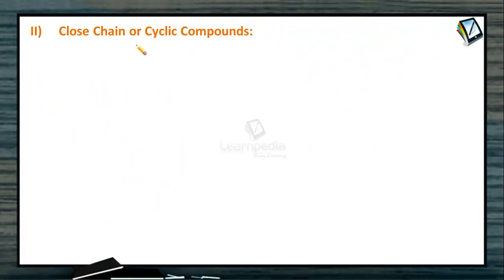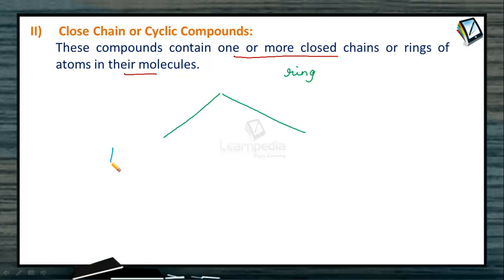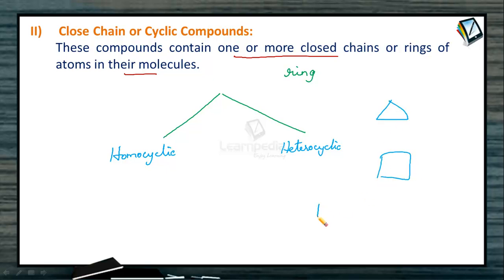The second type is closed chain compounds. These compounds contain one or more closed chains or rings of atoms in their molecules, meaning the terminal carbon atoms are linked with each other to form closed rings. These are called cyclic or closed chain compounds, and they are further divided into two types: homocyclic and heterocyclic. The ring can be three-membered, four-membered, five-membered, six-membered, and so on.